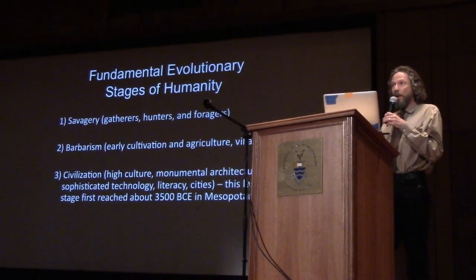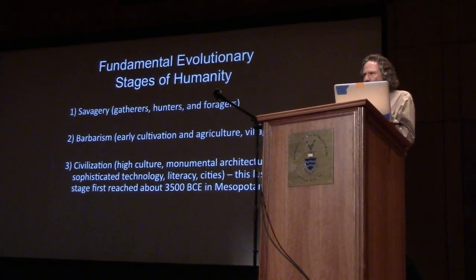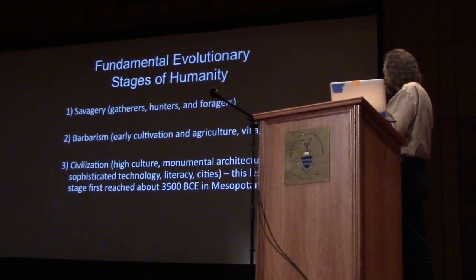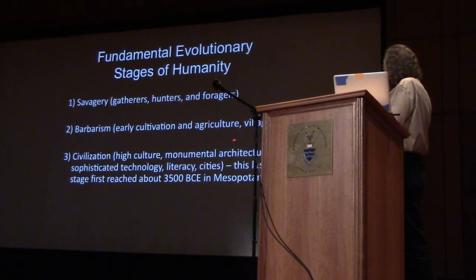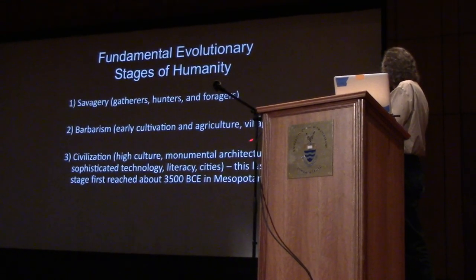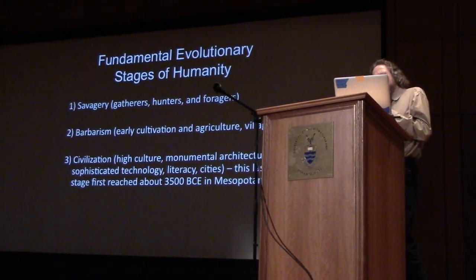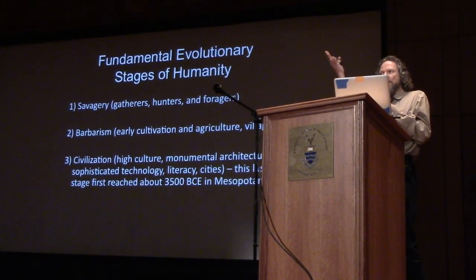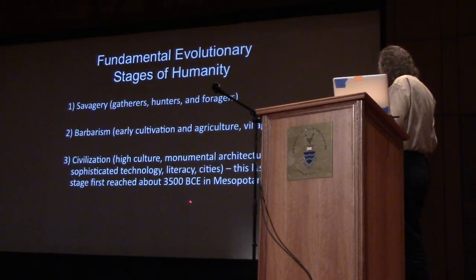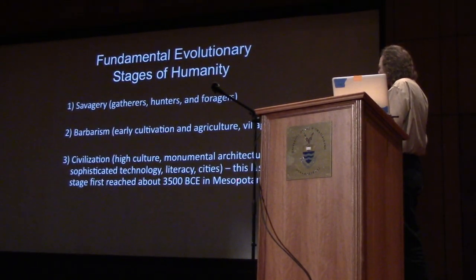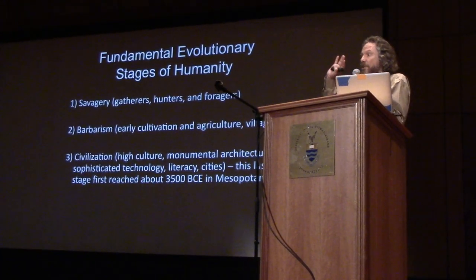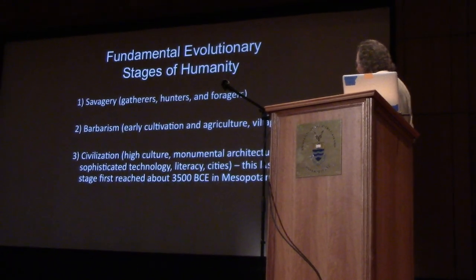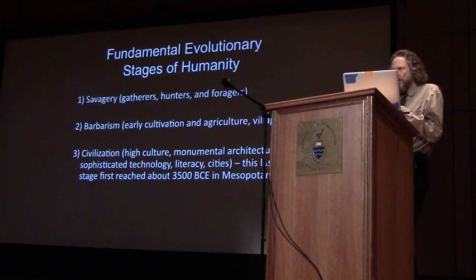So you have hunter-gatherers, then you have the barbarians in a classic, technical sense. Barbarians might have a little bit of early cultivation, some agriculture, and they might live in villages. It's sort of the rise of humanity through the stages of development, and then ultimately we arrive at — or we progress to, or achieve the highest status — and that is true civilization.